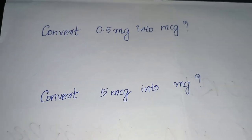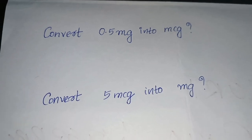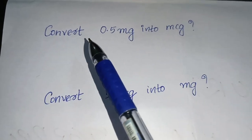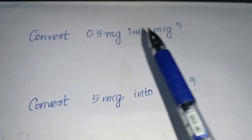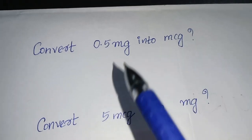As many of you are having confusions with basic conversions, let me help you with that. First question: convert 0.5 mg into microgram. So how can you convert mg into microgram?